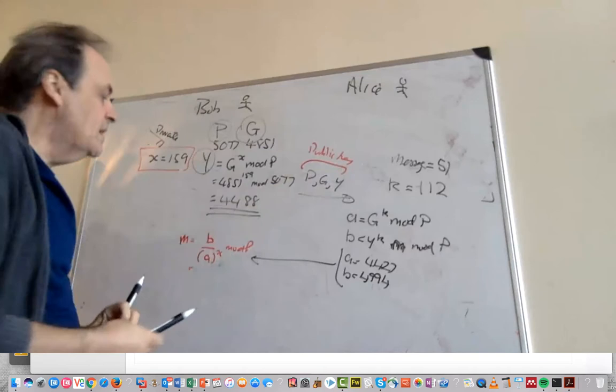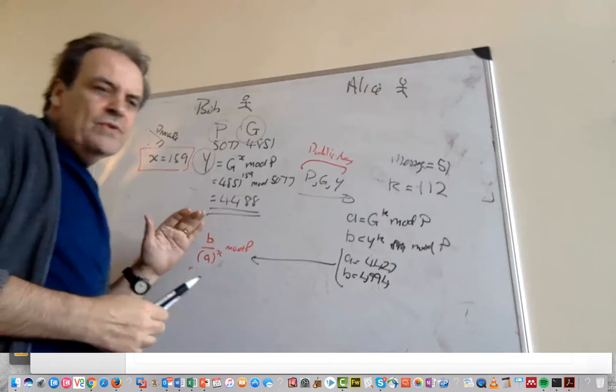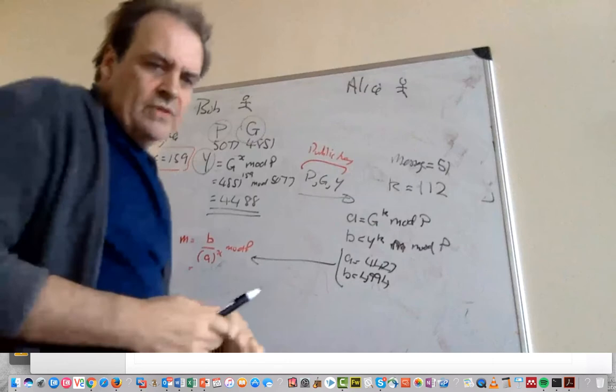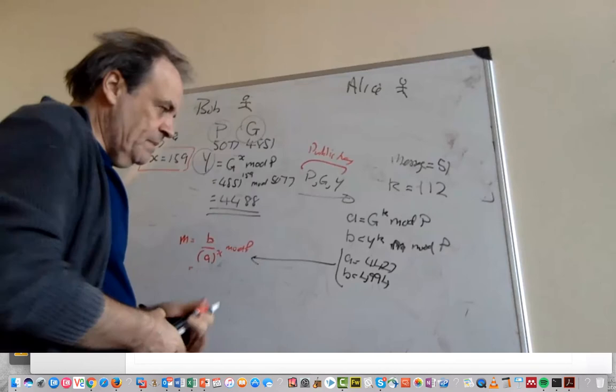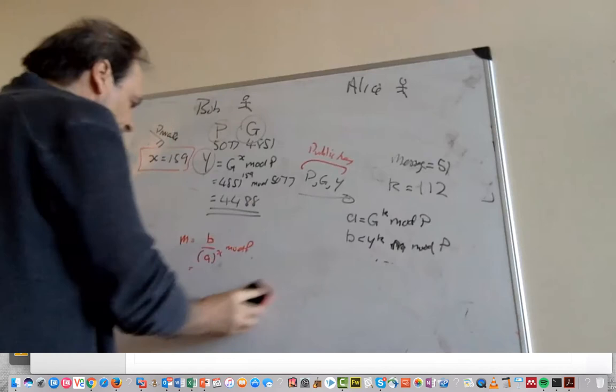So how did that happen? How were we able to do that when we didn't know the value of K? So I'll just show how that happens. Remember we had this value here.